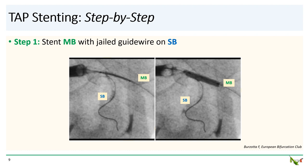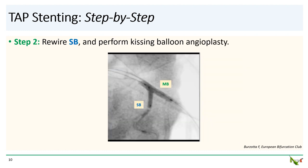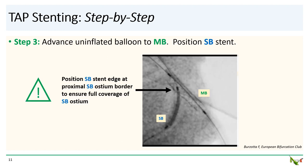Here is how you do TAP. In step one, as in all provisional bifurcation stenting techniques, both the main branch and side branch are wired and the main branch is stented, which then jails the side branch. In step two, the side branch is rewired through the main branch stent and kissing balloon angioplasty is performed. In step three, an uninflated balloon is advanced into the main branch and the side branch stent is positioned. This is the most tricky part of TAP — you have to carefully position the side branch stent so that its proximal edge is lined up with the proximal border of the side branch ostium, ensuring full coverage of the side branch ostium.